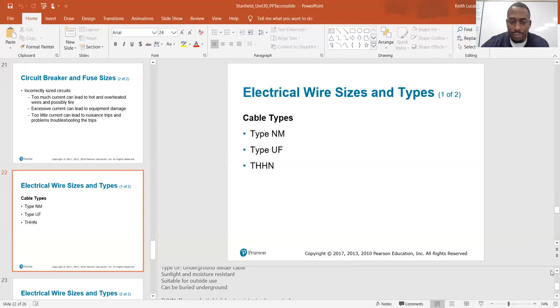Type UF: underground feeder cable, sunlight and moisture resistant, suited for outside use, can be buried underground.